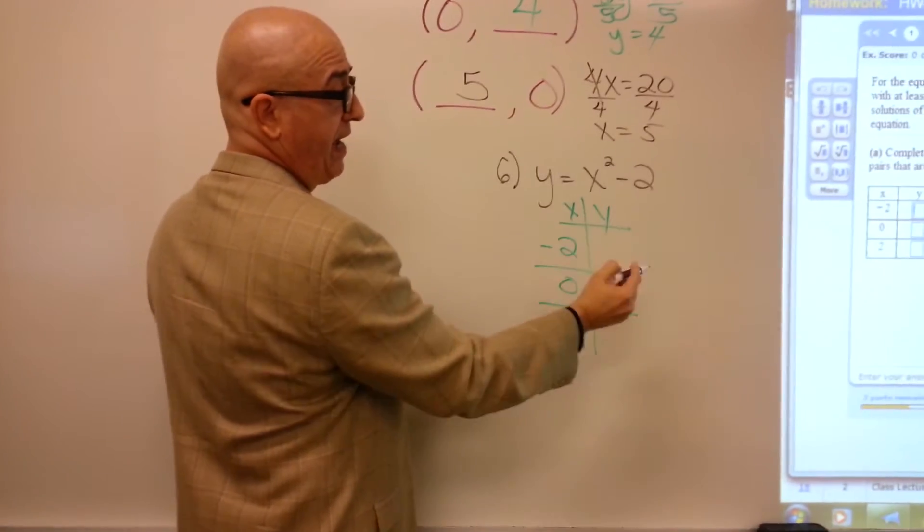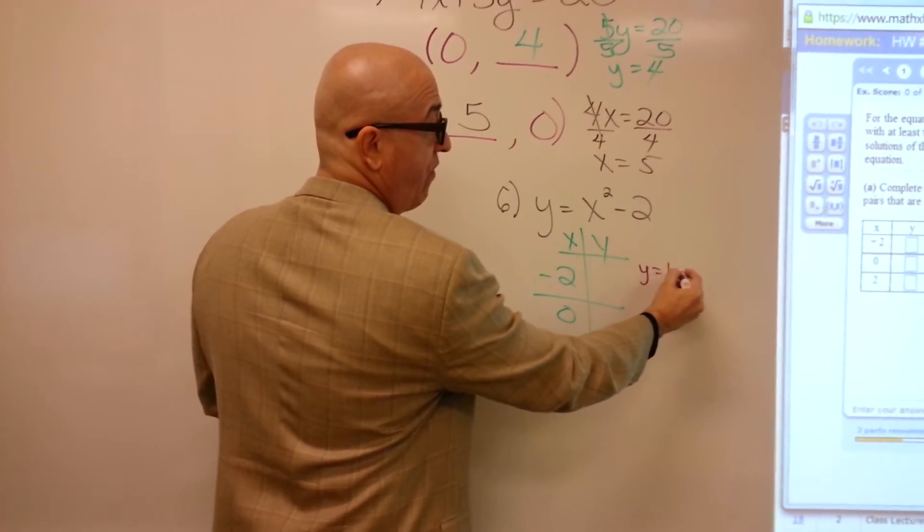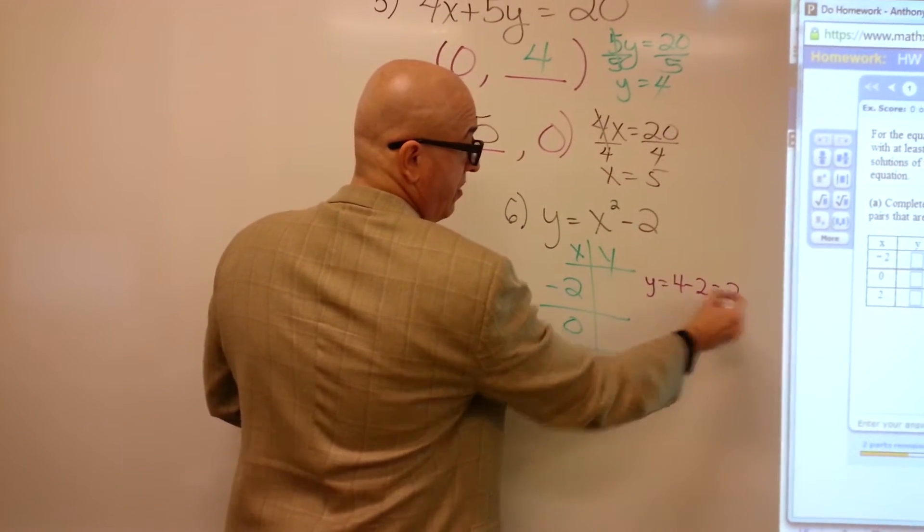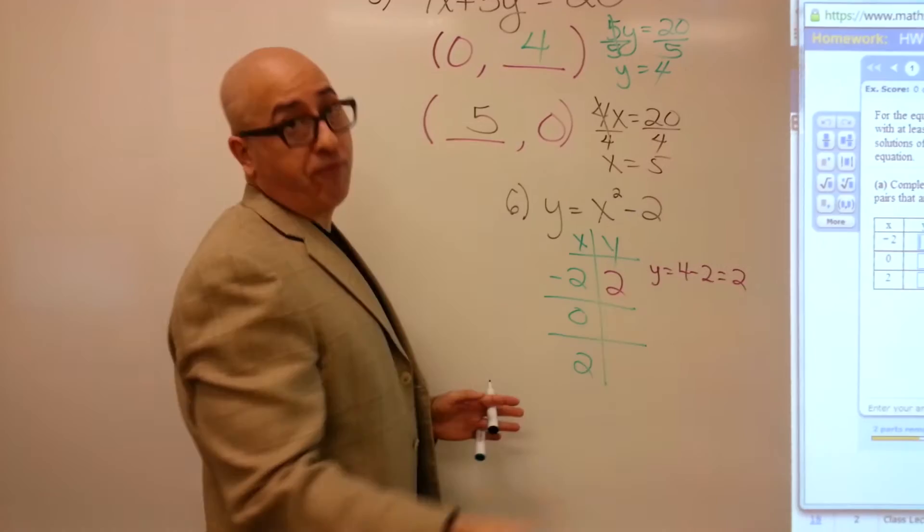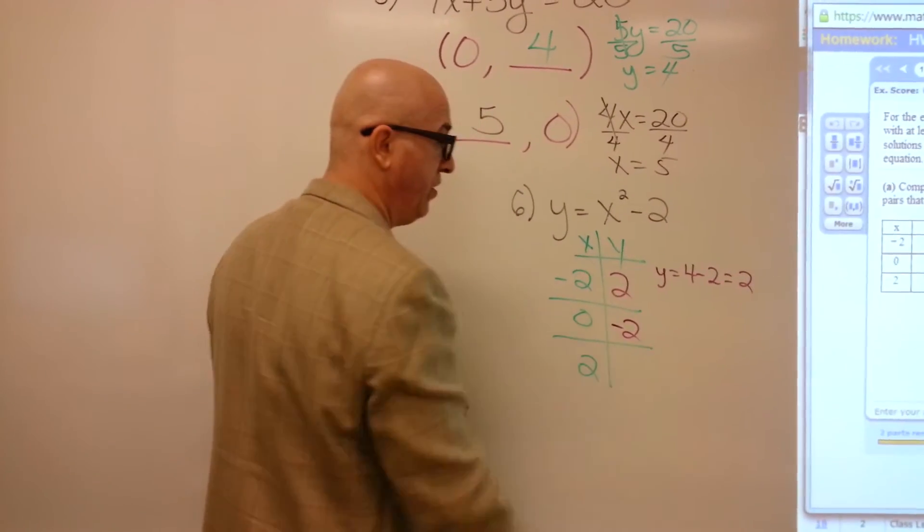Well, that's not too bad. Negative 2 times negative 2 is 4, so we have 4 minus 2. So 2. Plugging a 0 in pretty easy. 0 minus 2, negative 2.